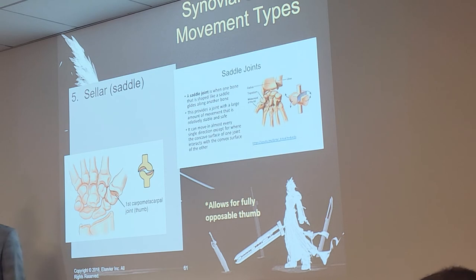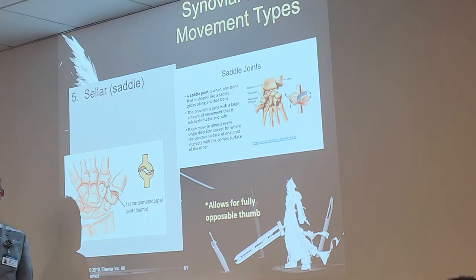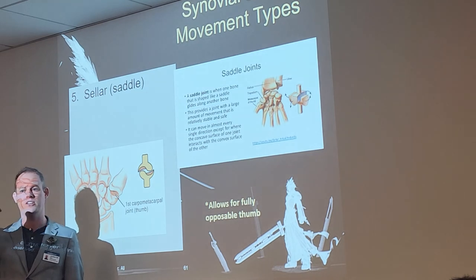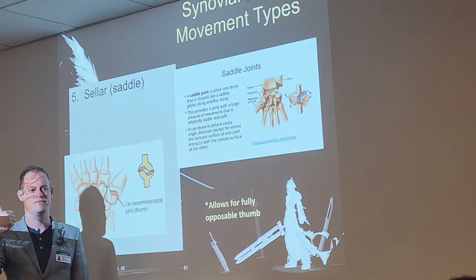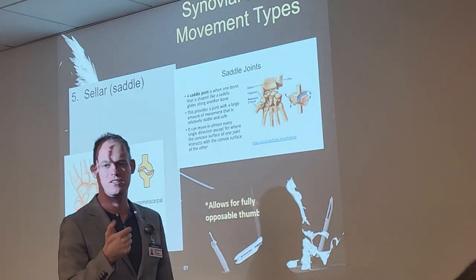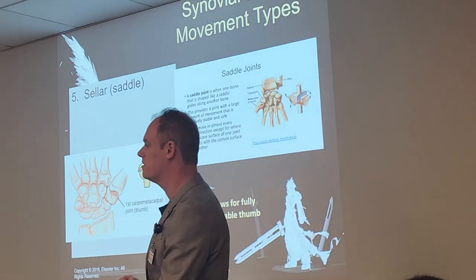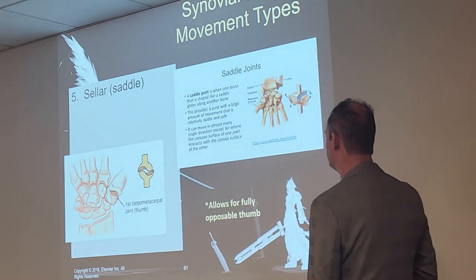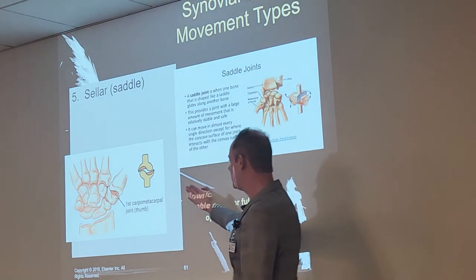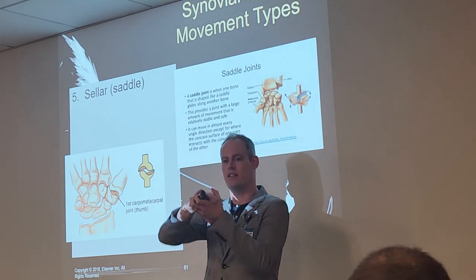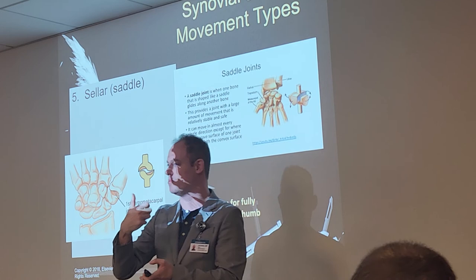The saddle joint — there's only one in the body. That's the one that connects the thumb and allows it to be fully opposable. You can move it in any direction. It's also called a sellar or saddle joint — shaped like two little cups coming together, allowing that fully flexible thumb motion.